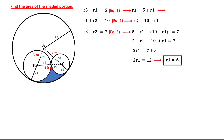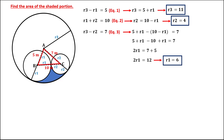To solve for R2, since R1 equals 6, R2 equals 10 minus 6, so R2 equals 4. We now have the radii for all three circles. Using the triangle formed, this side is 5, this side is 7, and this side is 10.